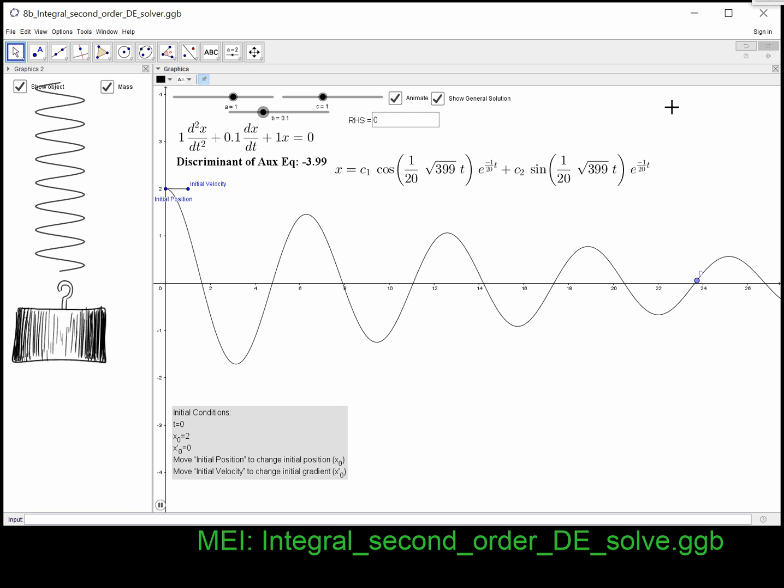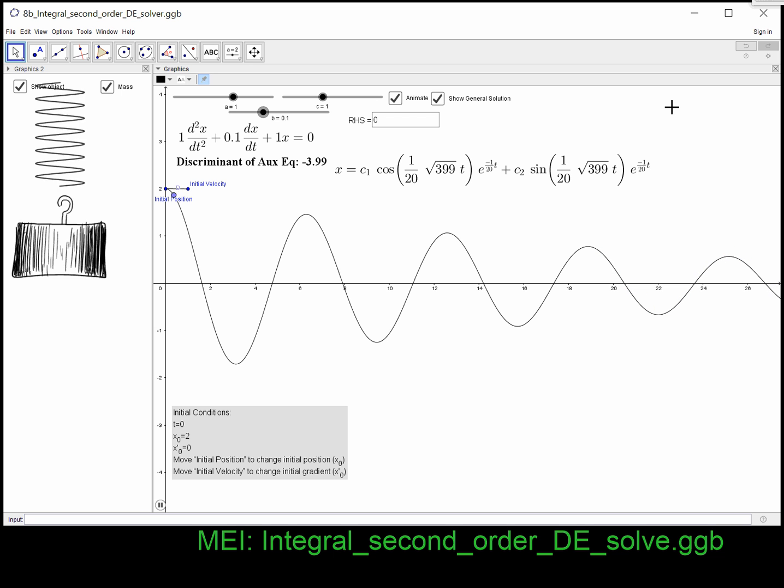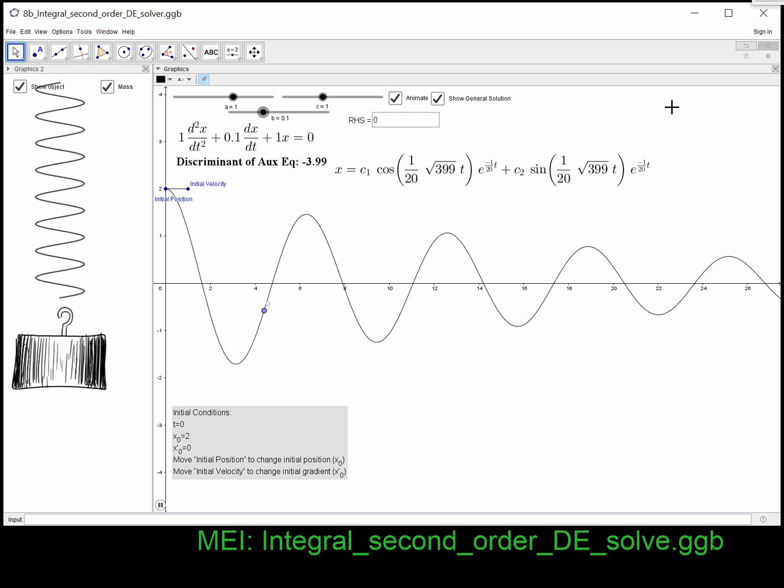And we get an overshoot, aren't we? So we start off at plus 2 and we end up going to minus 1.5. So we're bouncing big oscillations, positive and negative.